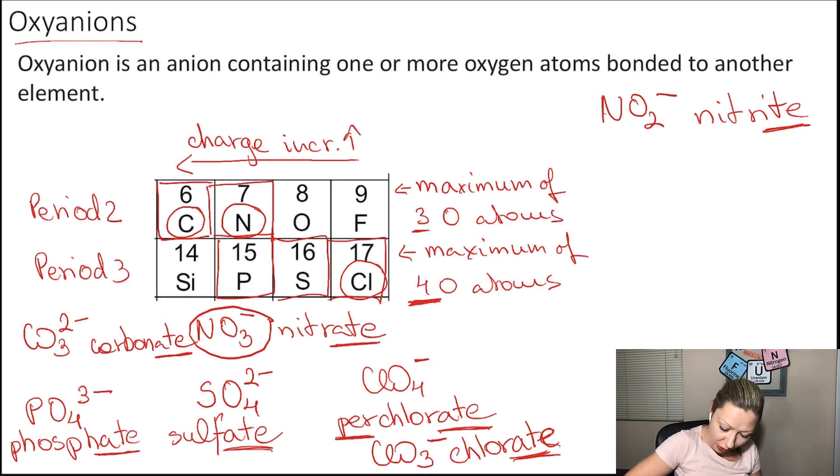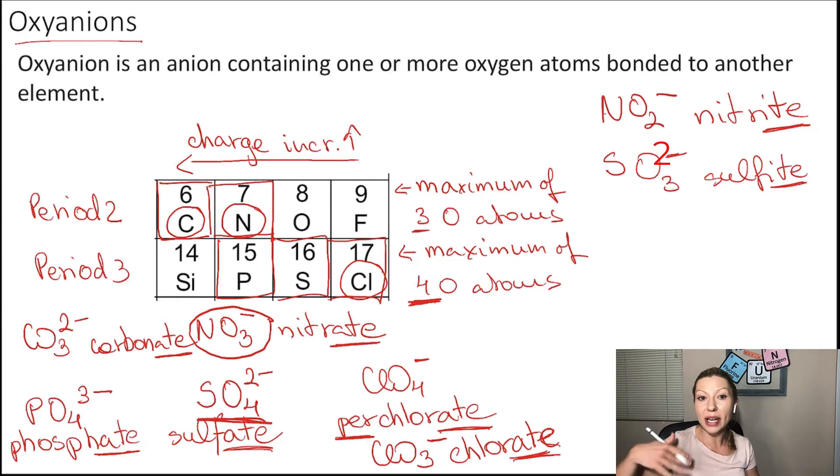What happens if I do the same with the sulfate ion? So I take away an oxygen atom. SO4 was my starting point. Now I have SO3. This is going to be the sulfite ion. You see that I have an ending of -ite. I can do the same thing with every single oxyanion. And there is a pattern.